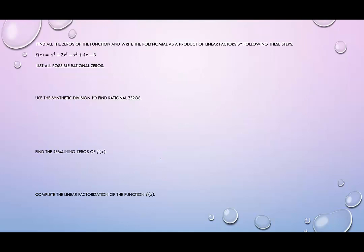Okay, so now let's see that in action. Find all the zeros of the function and write the polynomial as a product of linear factors by following these steps. So when we say linear factors, what that means is that within the factor itself, the exponent of any variable is 1. The function we're talking about is f(x) = x^4 + 2x^3 - x^2 + 4x - 6.